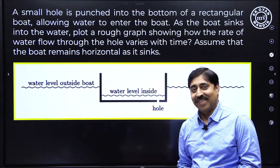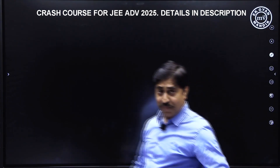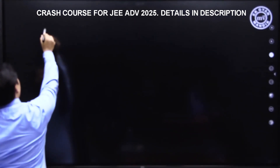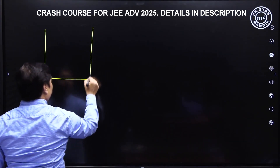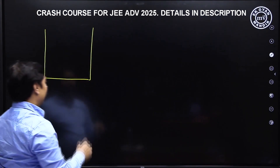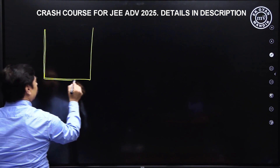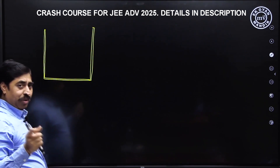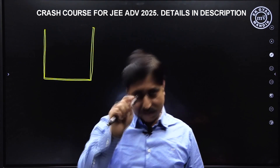You can pause the video and try the question yourself. Let us think that this is our empty boat — it does not have any hole. For a moment, let us think there is no hole at the bottom of the boat. It is made of some wood — it can even be made of some metal. But will a metal boat sink? No, it will not — think about why.